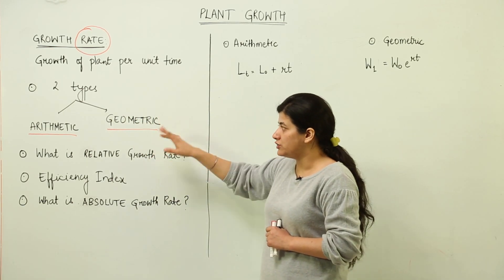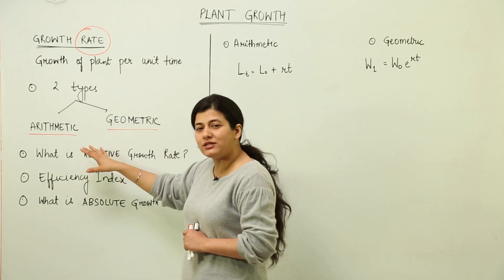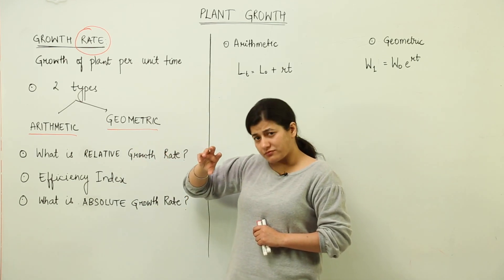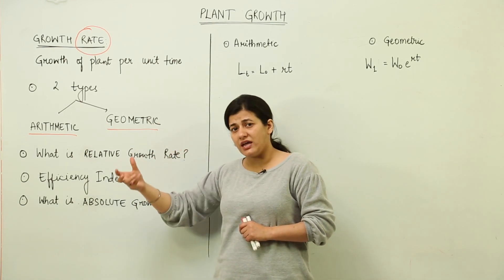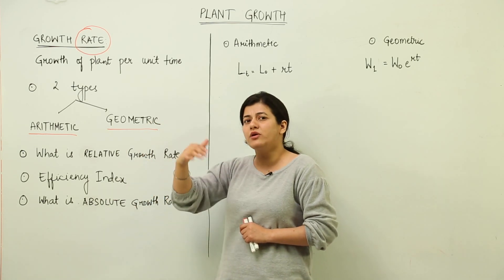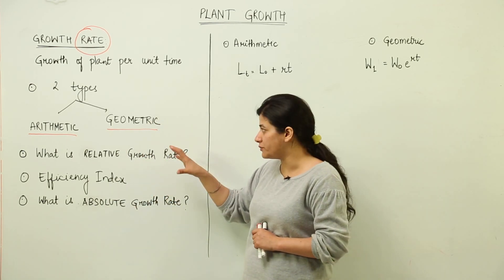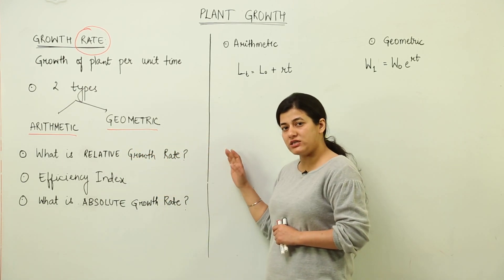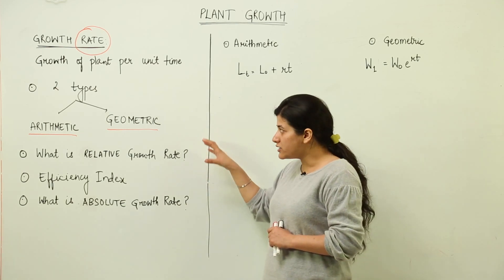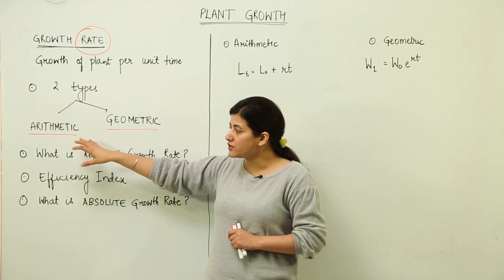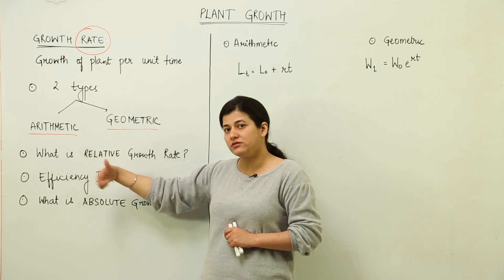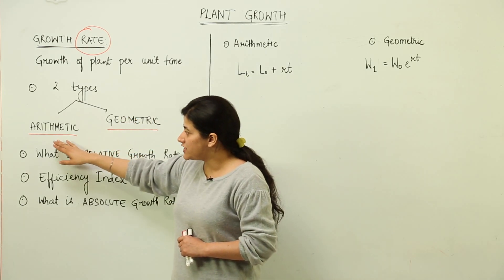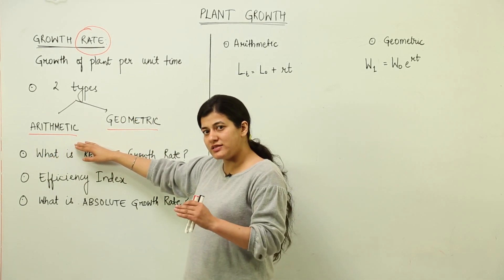To brush up on math: in an arithmetic progression, 2 becomes 4, 4 becomes 6, 6 becomes 8, 8 becomes 10 — you are adding 2 each time. In a geometric progression, 2 becomes 4, 4 becomes 16, 16 becomes 32 — you are squaring the number. In arithmetic progression you add the same number repeatedly to the previous number, while in geometric you multiply. As the name suggests, arithmetic growth is somewhat slower.